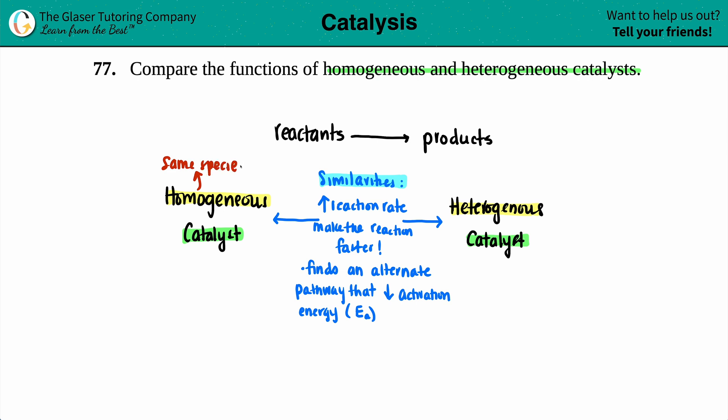For a homogeneous mixture, there are tons of compounds in the mixture but you can't tell the difference between them because everything is one whole uniform species — kind of like a can of soda. If you look at a can of soda, there are tons of ingredients listed, but when you pour it out, you just see one color. You cannot tell the difference between where the aspartame or other ingredients are. That's homogeneous.